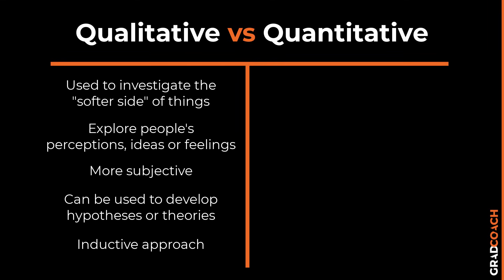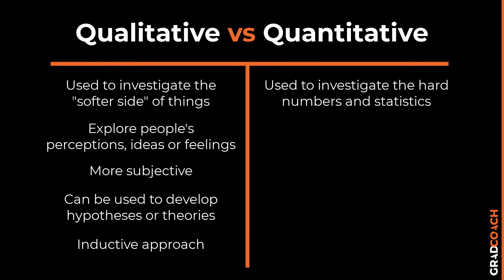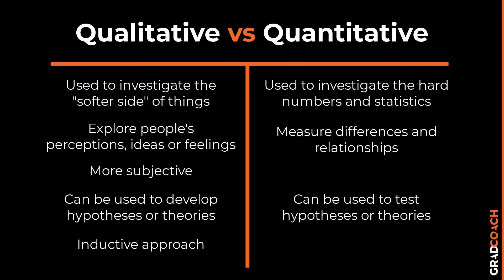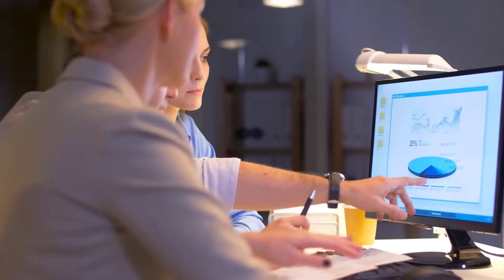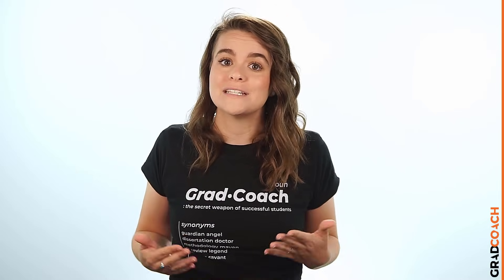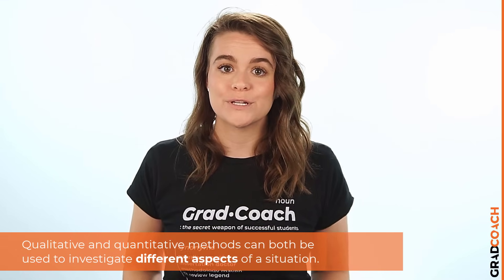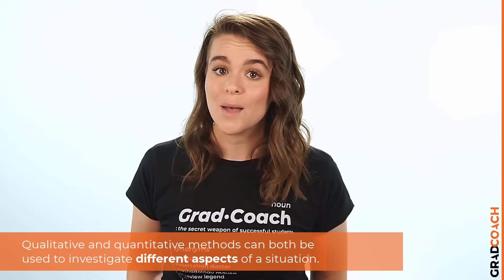Contrasted to this, quantitative research focuses on the hard numbers. Typically, quantitative research is used to measure differences between groups and relationships between variables, as well as to test hypotheses. Therefore, it is more objective in nature and takes a deductive approach. For example, you could use a quantitative approach to measure what percentage of people prioritize price when choosing a laundry detergent, and assess how this varies between neighborhoods, cities, or different demographic groups.